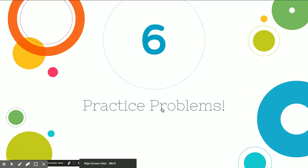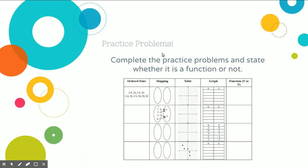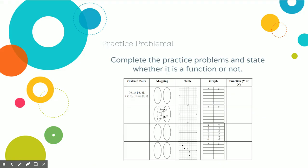You've got some practice problems to do. In Edpuzzle, you'll just say yes or no on whether something is a function. On the foldable, you'll change ordered pairs into a mapping, a table, and a graph, then say whether it's a function. You'll also take a mapping diagram and convert it into ordered pairs, a table, and a graph. If you have any questions, let me know, and we can also go over it in class tomorrow.